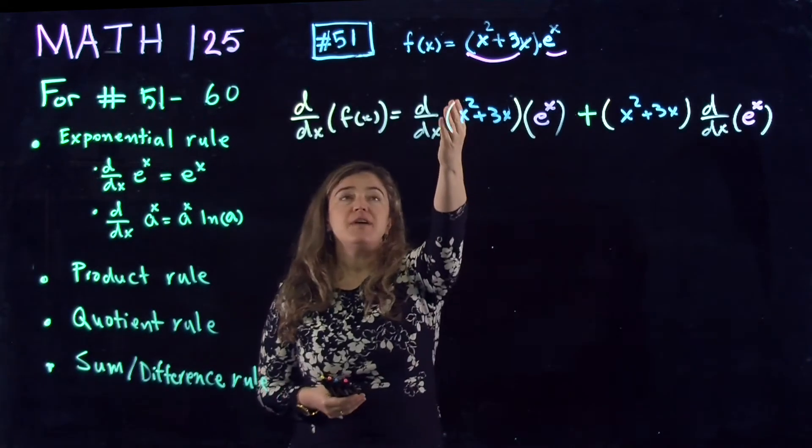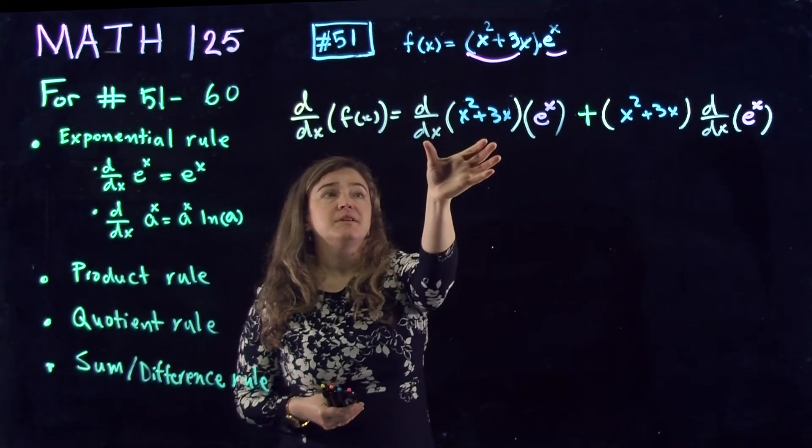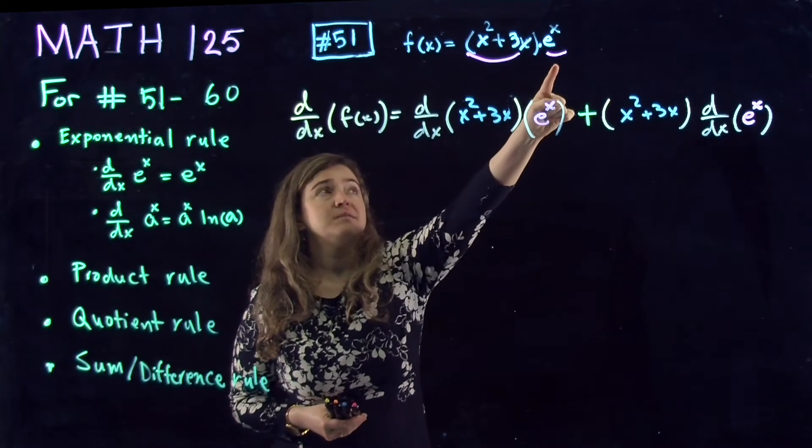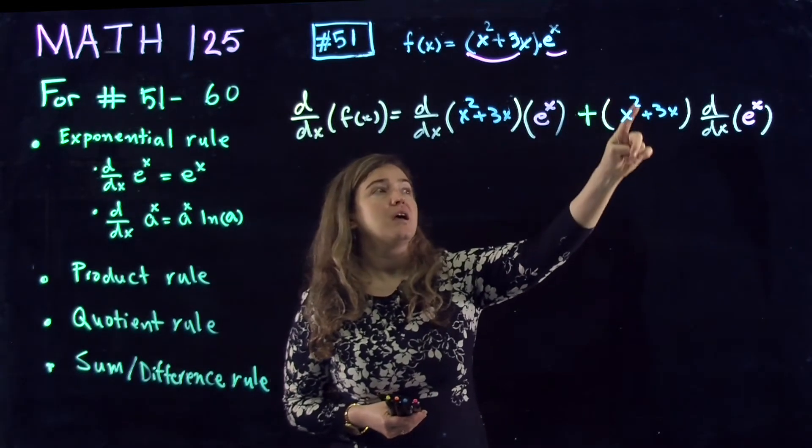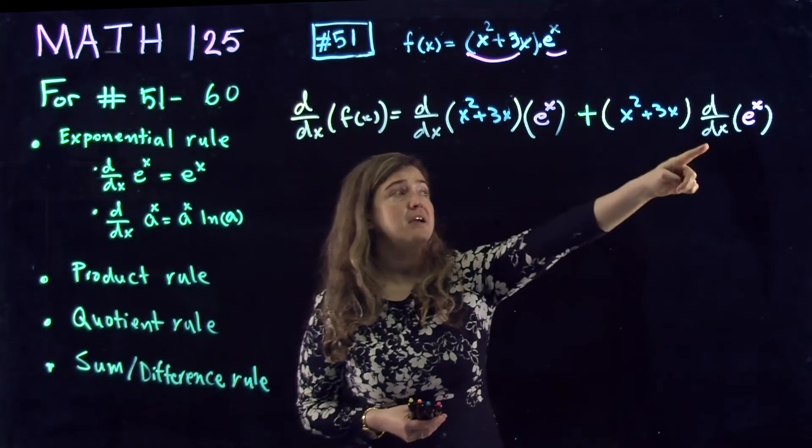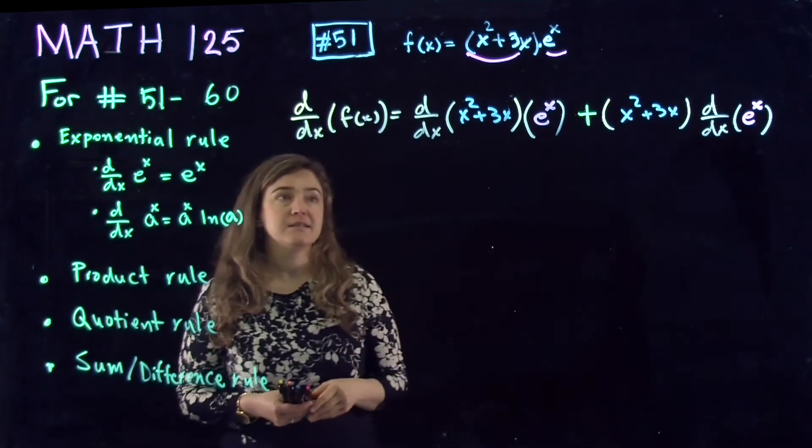So the derivative of f of x is going to be the derivative of the first function times the second function plus, that plus is important, and the first function times the derivative of the second function.